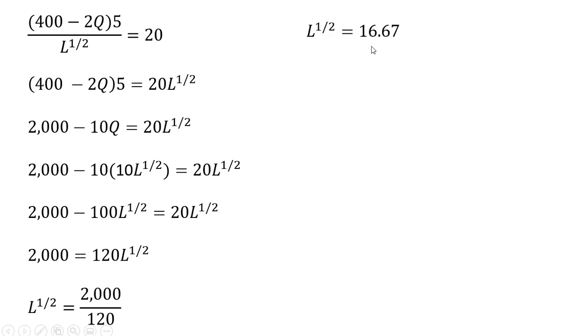2,000 divided by 120 gives us 16.67. And now squaring both sides. We see that L equals 277.8. That is a profit maximizing employment level for the monopoly. Okay, that's it.